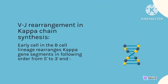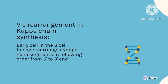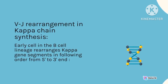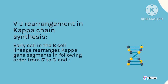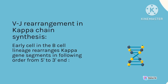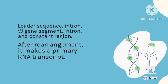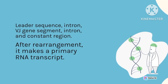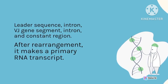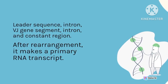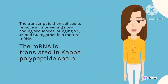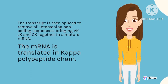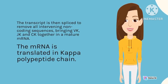VJ rearrangement in kappa-chain synthesis: An early cell in the B-cell lineage rearranges kappa gene segments in the following order from 5' to 3' end — leader sequence, intron, VJ gene segment, intron, and constant region. After rearrangement, it makes a primary RNA transcript. The transcript is then spliced to remove all intervening non-coding sequences, bringing VK, JK, and CK together in a mature mRNA.